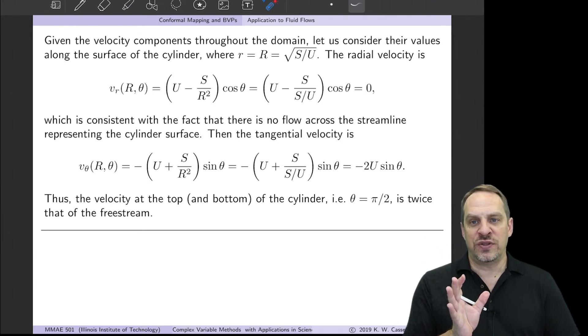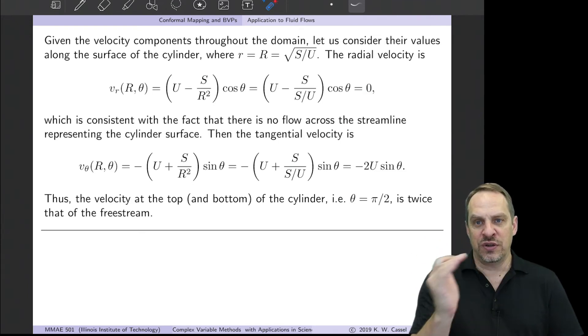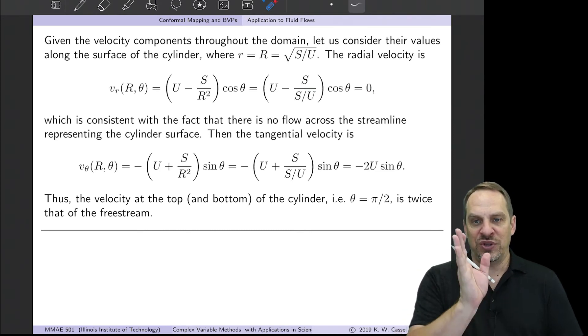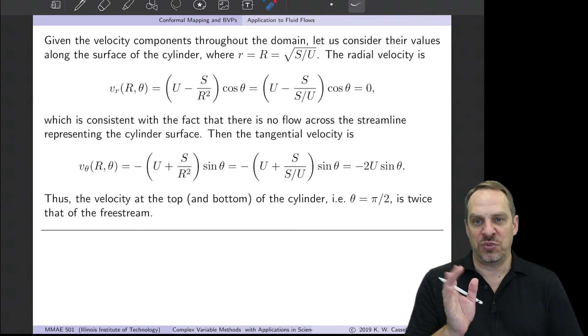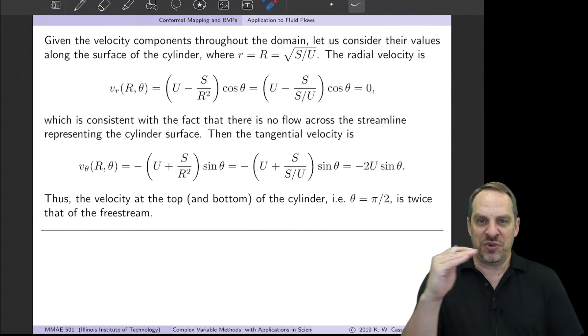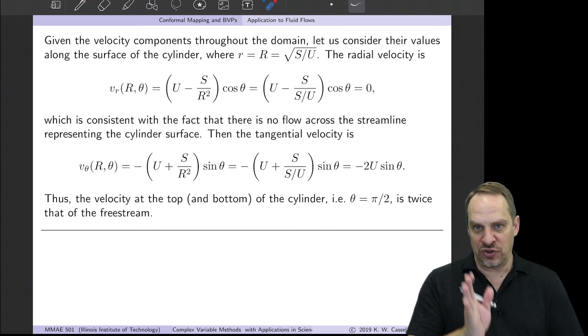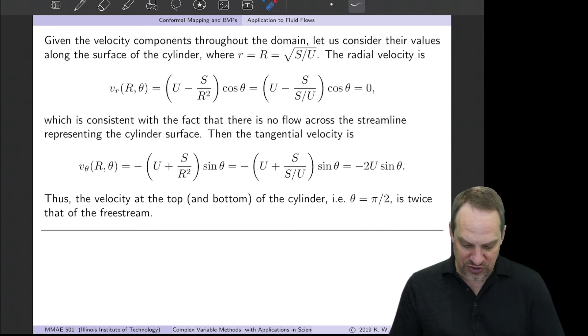You just ask yourself, does that make sense? This is the flow around a circular cylinder, and we have a streamline in a circular shape. What this is saying is right at that surface, there is no radial velocity of the fluid. So there's no fluid crossing that streamline, which is exactly what we expect. Because remember, the streamlines are everywhere tangent to the velocity vector. So there's no flow across a streamline. So that confirms that.